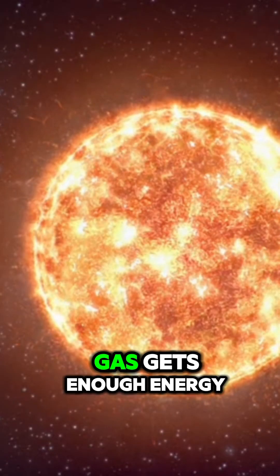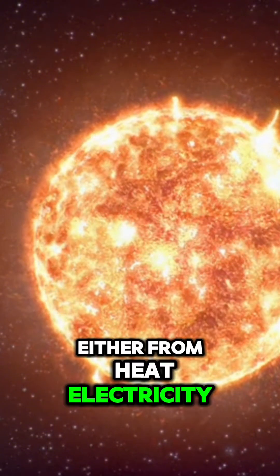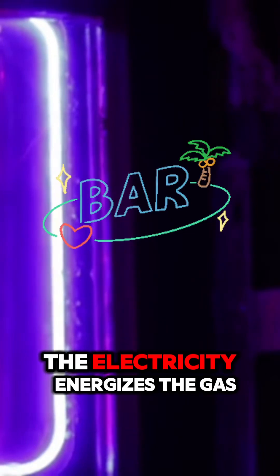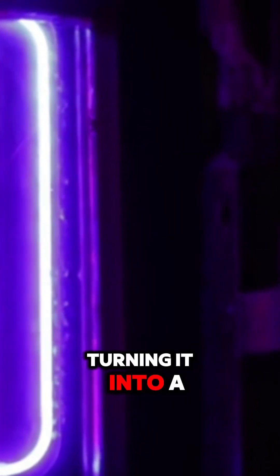Plasma forms when a gas gets enough energy, either from heat, electricity, or radiation, to knock electrons off its atoms. For example, in a neon sign, the electricity energizes the gas, turning it into a glowing plasma.